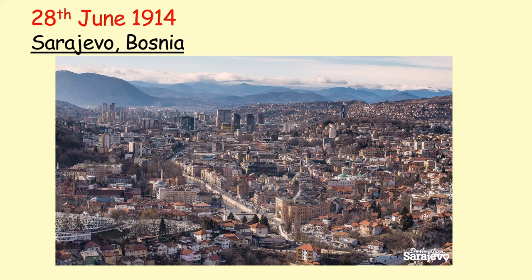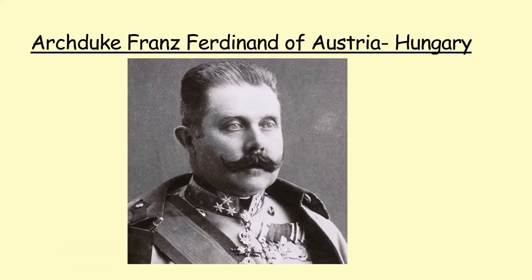That's a modern photograph of Sarajevo in Bosnia. What happened on that day was Archduke Franz Ferdinand, who was the heir to the throne in Austria-Hungary — so he was going to take over control — was visiting the city of Sarajevo with his wife to inspect Austrian troops. It was also a publicity campaign to try and win more support and make the Austrian people more popular in the Bosnian region.